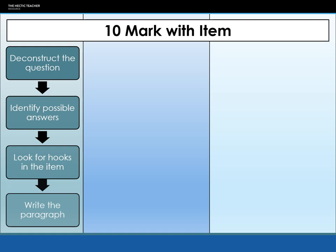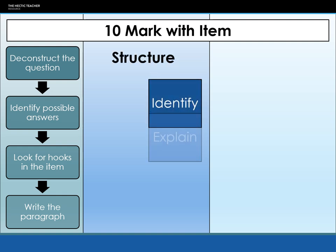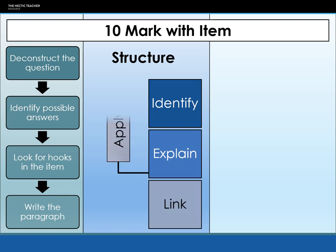Our next stage is to write the model paragraph. The structure for a 10-marker with item — there is no introduction, there is no conclusion, and there is no evaluation. What you are being asked to do is identify, explain, link, and apply. We put the apply where it fits — it might fit in where you're identifying, or it might fit in your explanation.